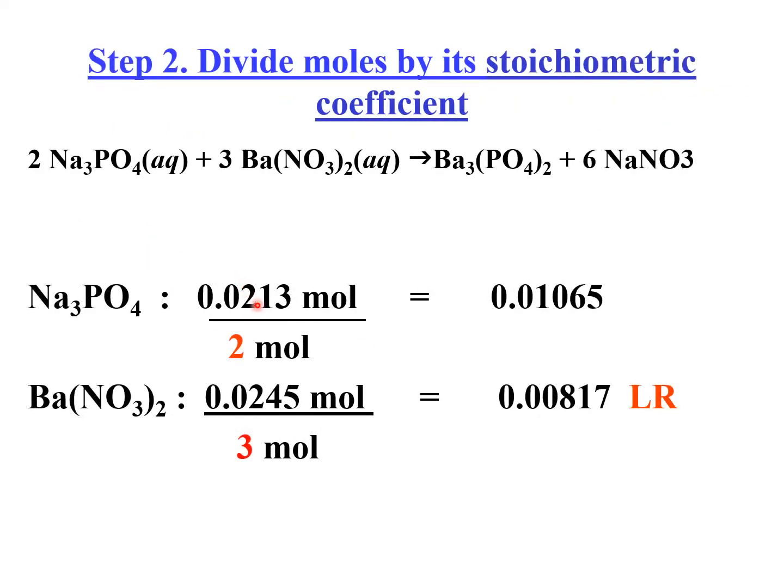Sodium phosphate. We divide it by its coefficient 2. And sa barium nitrate, we divide this by its coefficient 3. And then, we compare. Alin na mas mababa? Ito, mas mababa sa dito. So, this one is the limiting reagent.